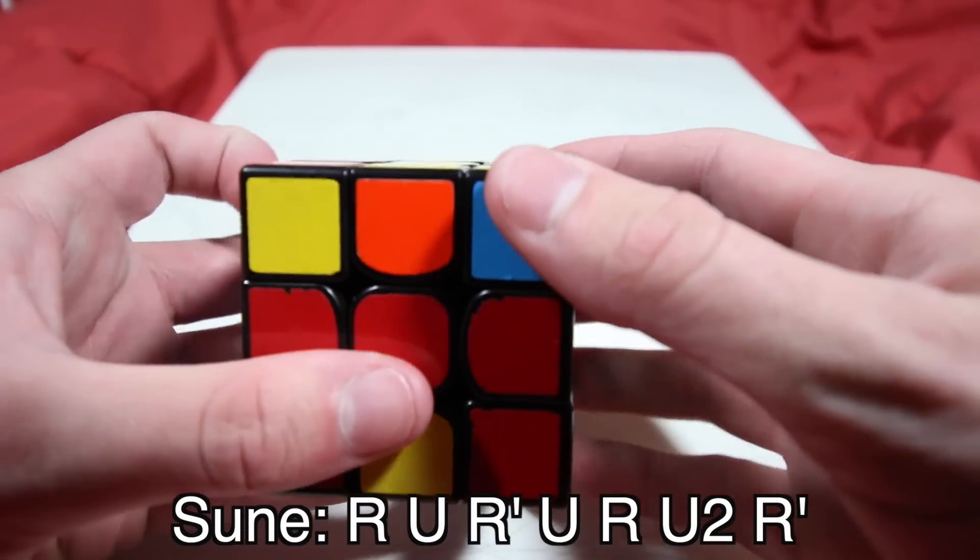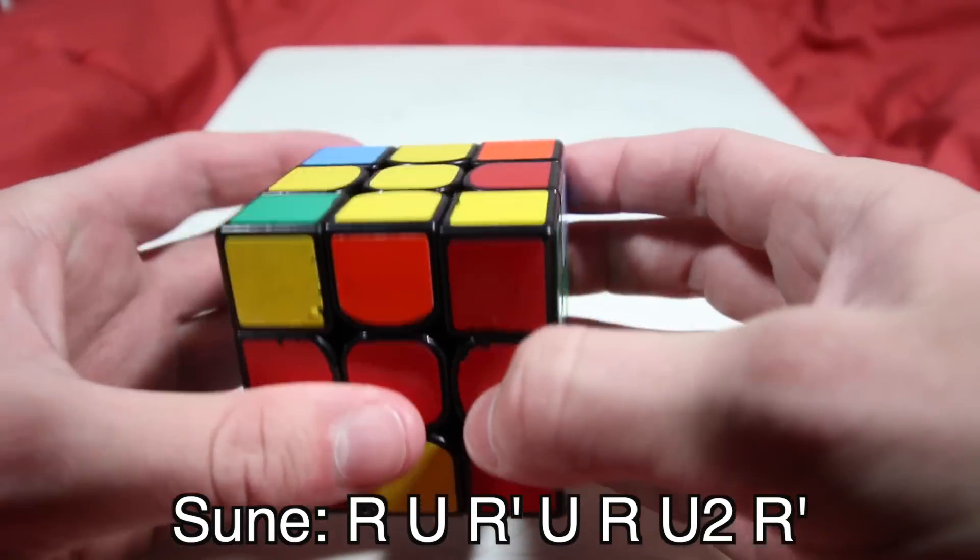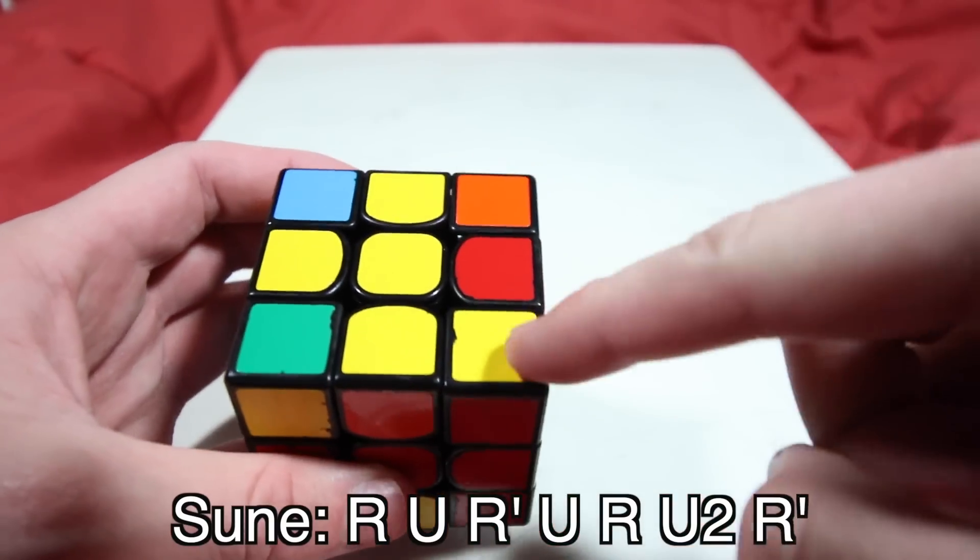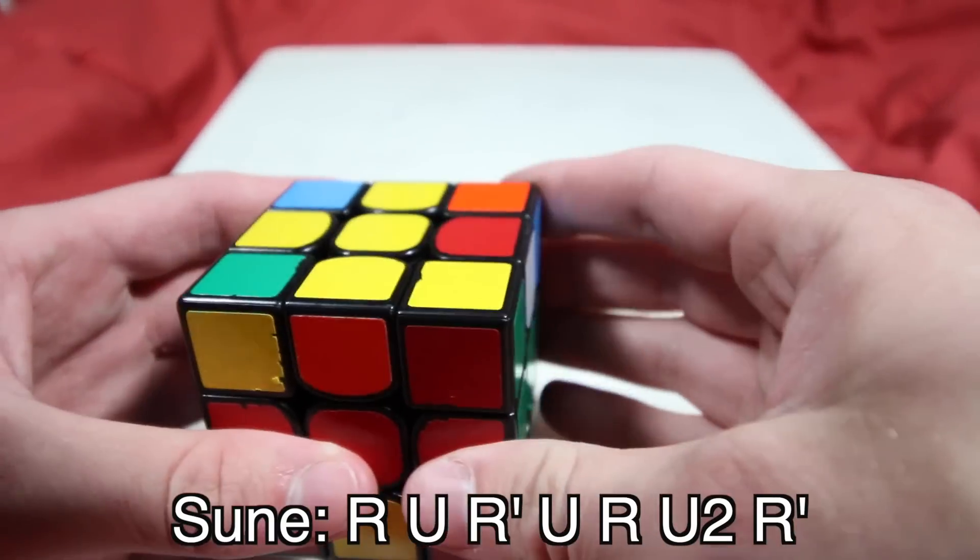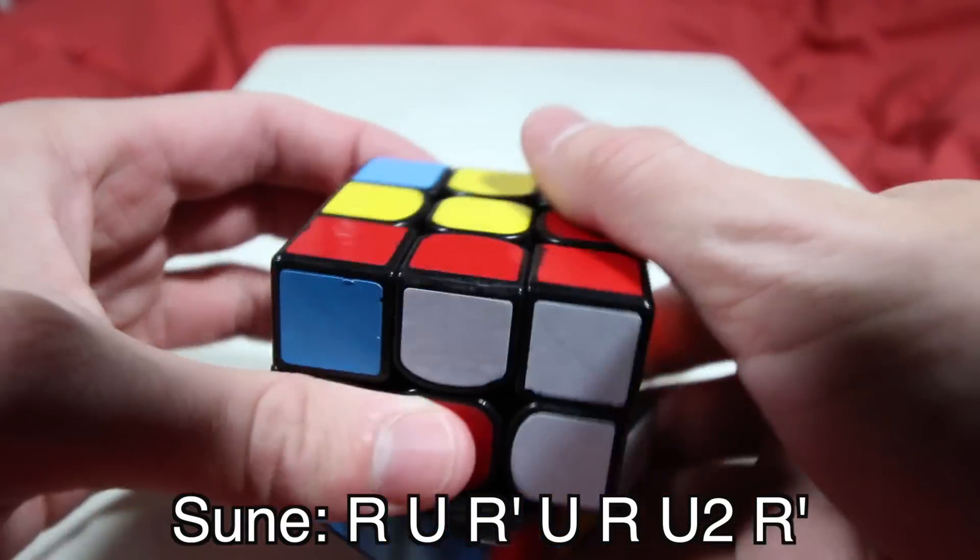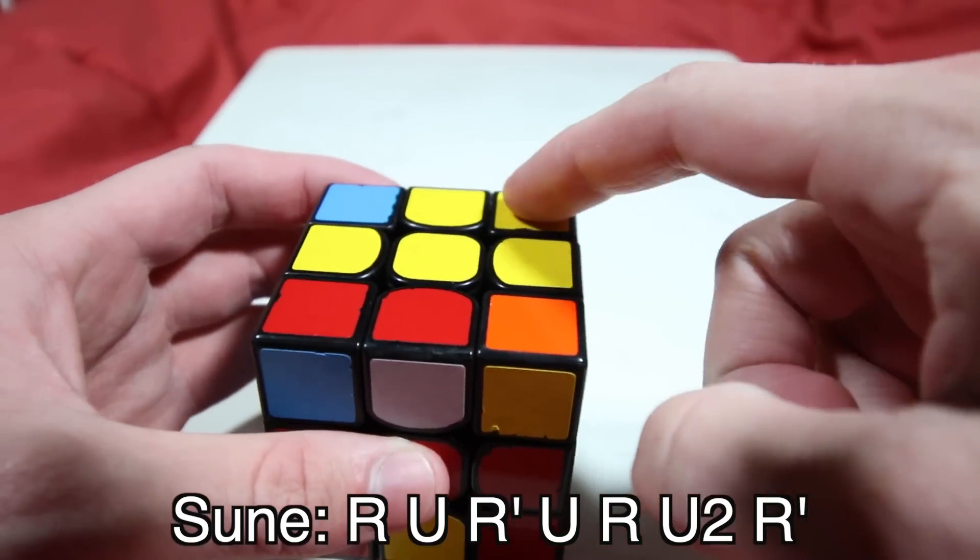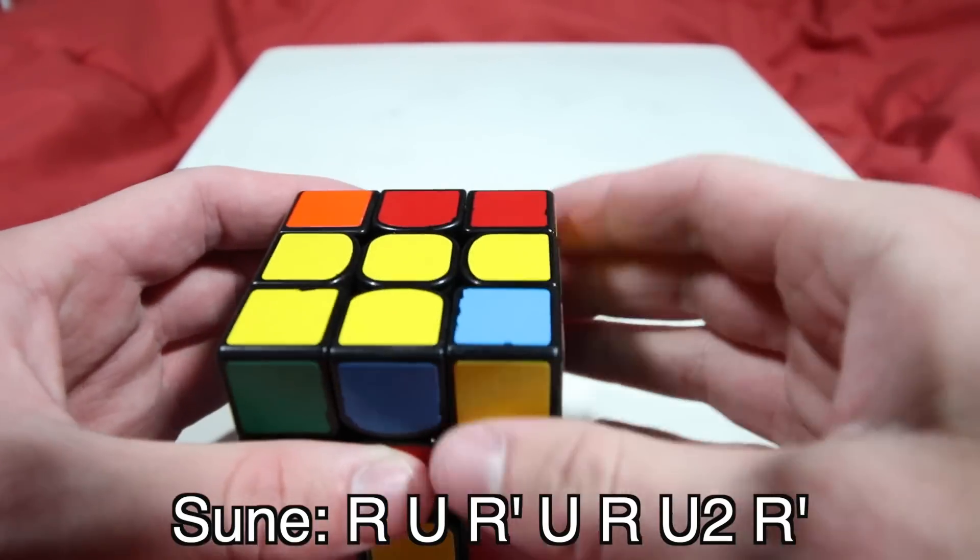When you only have one, you put that one face-up corner in the front left and perform the Sune algorithm again, and then eventually, if you keep repeating this process, you'll get to the point where all the corners are oriented.